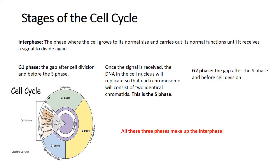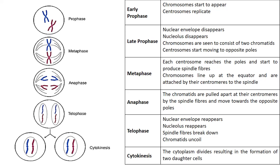Now to the nitty-gritty: mitosis. Many students become nervous because it involves a lot of detail, but it's easy to remember if you pay attention to the images. Mitosis occurs in five different stages: prophase, metaphase, anaphase, telophase, and cytokinesis. Cytokinesis is sometimes not considered a phase of mitosis, giving only four stages. Most exam questions won't ask about the number of phases but will ask what is happening at different stages, or ask you to identify a phase from an image.